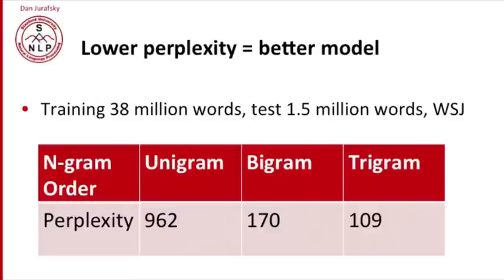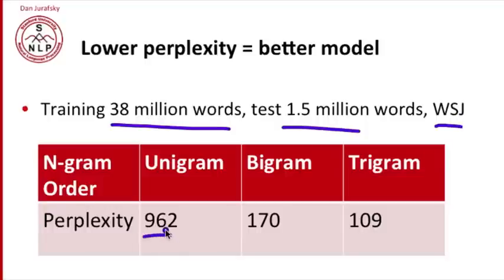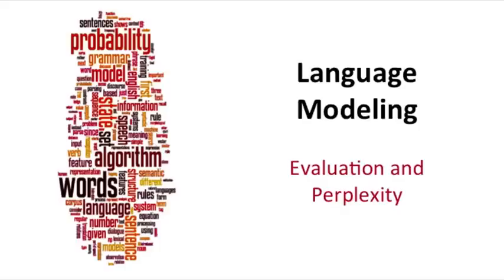So in general, the lower the perplexity, the better the model. For example, with a training set of 38 million words tested on 1.5 million words from the Wall Street Journal: a unigram model has a perplexity of 962, a bigram model has a much lower perplexity of 170, and a trigram model achieves an even lower perplexity. Since perplexity models something like average branching factor or average predictability, the lower you get, the better you are at predicting the actual data.